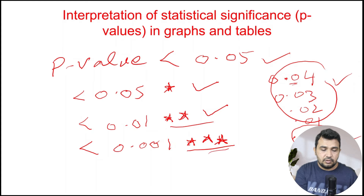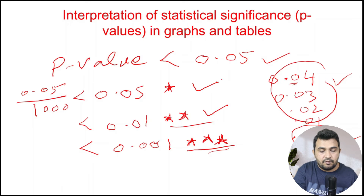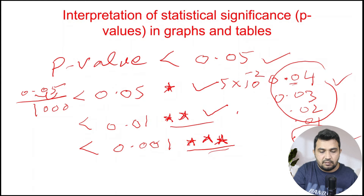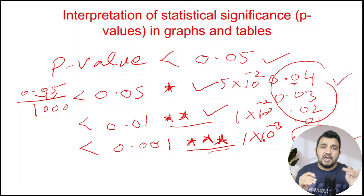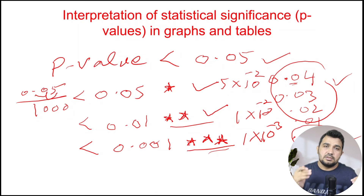Single star can be called significant, double star highly significant, and triple star highly highly significant. In scientific notation: 0.05 is 5 × 10⁻², 0.01 is 1 × 10⁻², and 0.001 is 1 × 10⁻³. In simple terms, if the p-value exponent is negative, it is a good sign that the data is significant.